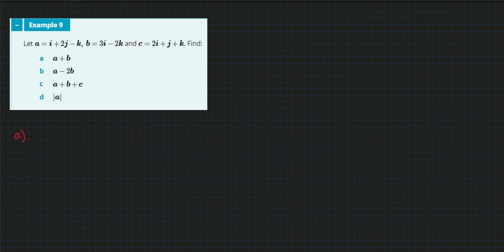So A plus B is simply equal to, you just need to add the components together. So 1 plus 3 in the i component, plus 2 in the j, and minus 1 and minus 2 in the k direction, which if we rewrite this again, we've got 4i plus 2j minus 3k.